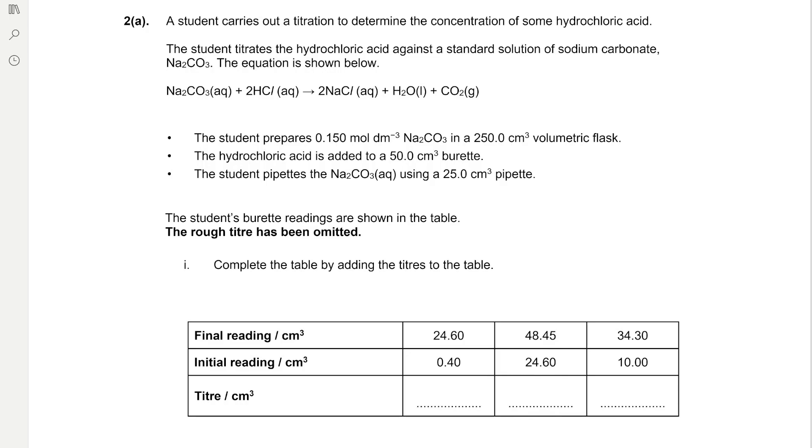The student prepares 0.15 moles per dm³ of sodium carbonate in a 250 cm³ volumetric flask. The hydrochloric acid is added to a 50 cm³ burette. The student pipettes their sodium carbonate using a 25 cm³ pipet. The student's burette readings are shown in the table. They've omitted the rough titre. Complete the table by adding the titres to the table.